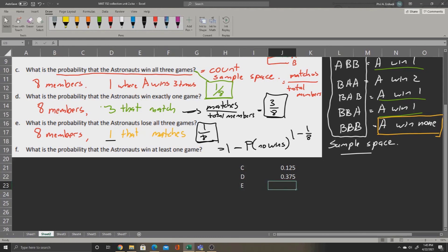Now for part E, we'll have again one over eight, and we'll say equals one divide eight.